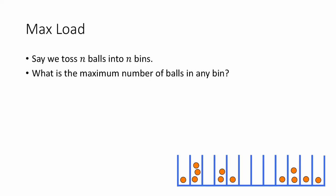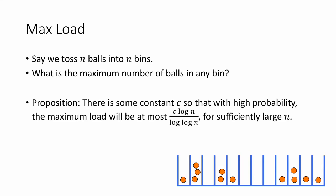Let's move on to the problem of maximum load. Suppose we drop n balls into n bins. What is the maximum number of balls that end up in any one bin? For example, in this picture I've tossed 12 balls into 12 bins, and the maximum load is 3, attained by that bin. We're going to prove that the maximum load is at most c · log n / log log n for some constant c and for sufficiently large n. Later, we'll see that this bound is basically tight.